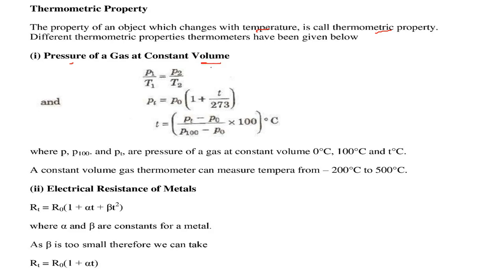So when the volume is constant then P1 by T1 equal to P2 by T2, this is equal to constant. This Pt is given by P0, 1 plus T by 273 and T is also given by, you can just rearrange this, Pt minus P0 by P100 minus P0 into 100 degree centigrade.